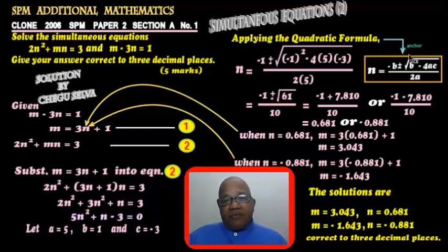Applying the quadratic formula: n equals negative b plus minus square root b squared minus 4ac over 2a. So n equals negative 1 plus minus square root negative 1 squared minus 4 times 5 times negative 3, over 2 times 5.